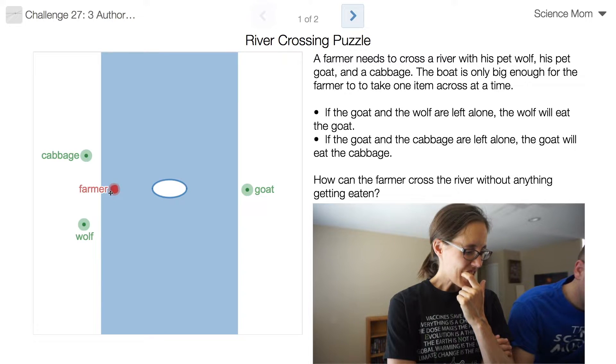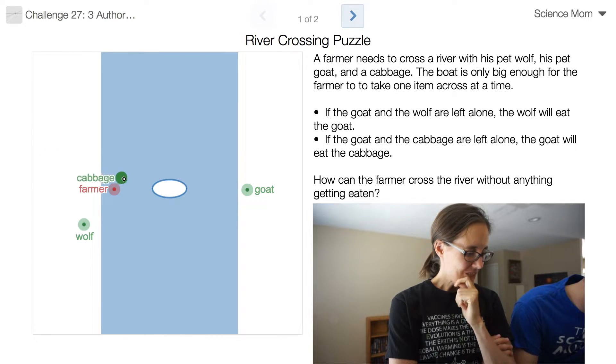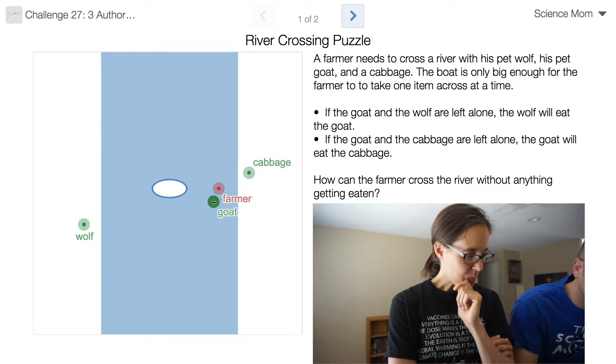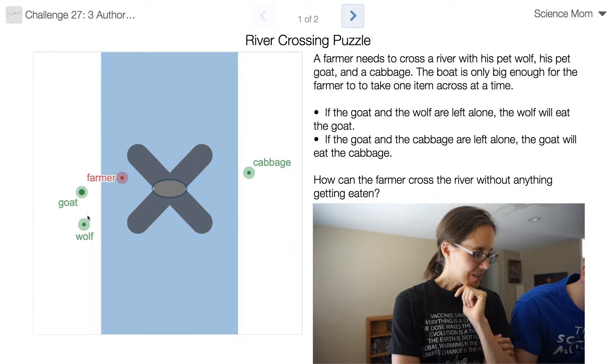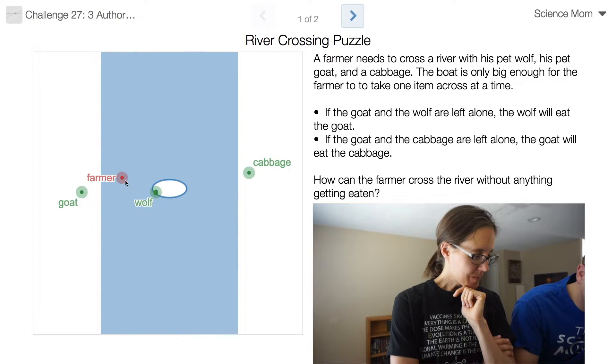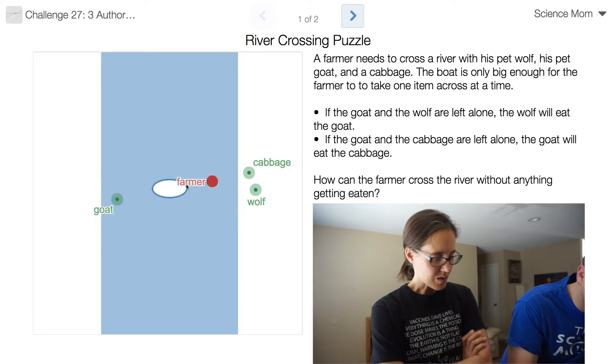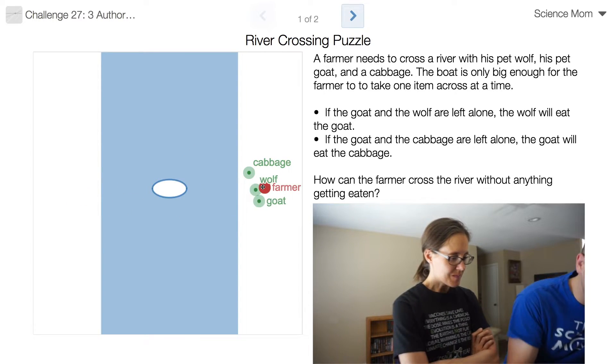Then, then I think he takes the cabbage. Farmer grabs the cabbage. And then he switches. Ah, he takes the goat back. Okay, so farmer takes the goat back. And then he takes the wolf. Grabs the wolf. Farmer takes the wolf across. And then he goes back and gets the goat. Takes the goat across. And ta-da.